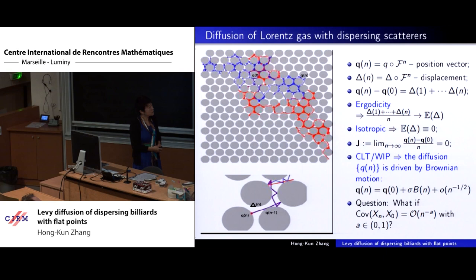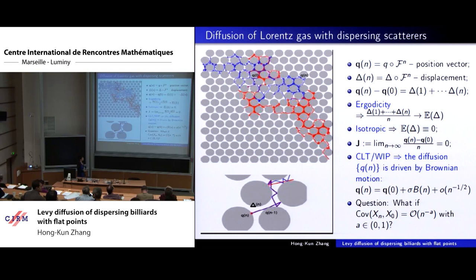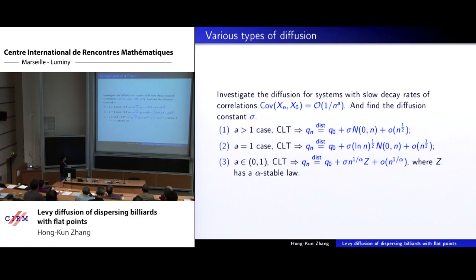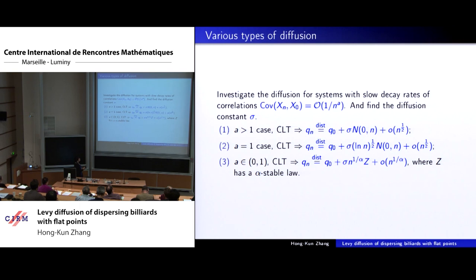There are three types of diffusion we can expect. One is classical diffusion, where you have the classical central limit theory. The second case is the stretched-exponential case where α equals 1. The case we are interested in here is when we expect to prove the stable law and convergence to Lévy. I want to review references that have been done for the α = 1 case and for billiards especially.